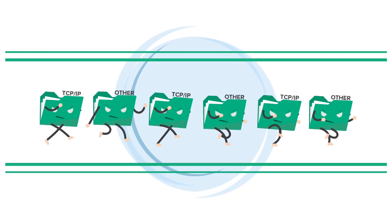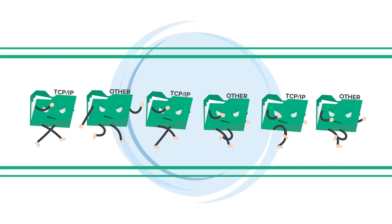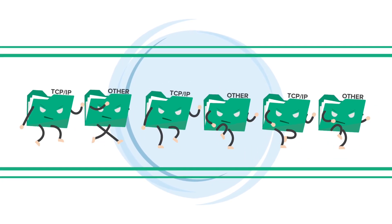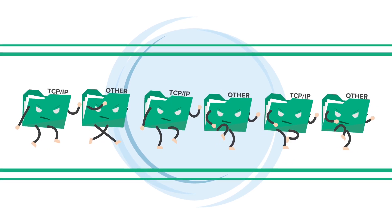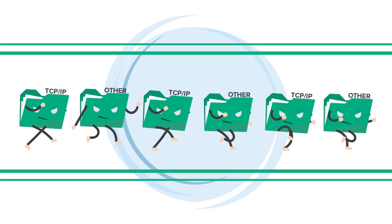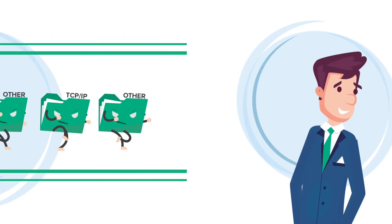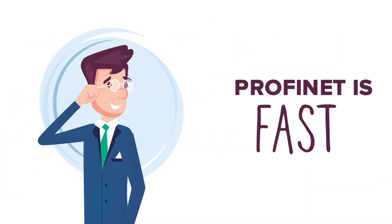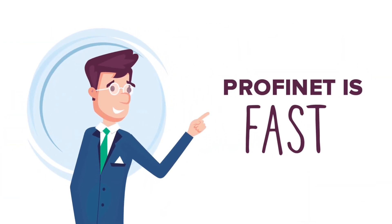PROFINET uses TCP/IP and other protocols for certain tasks, but automation devices require much higher precision and performance for cyclic data exchange. So, how does PROFINET handle this?